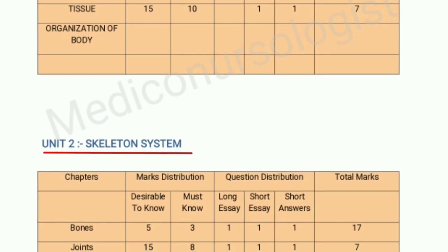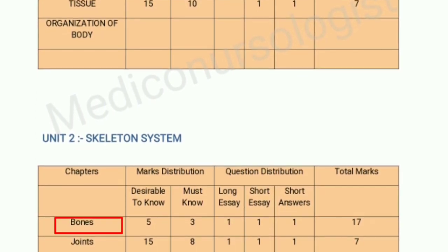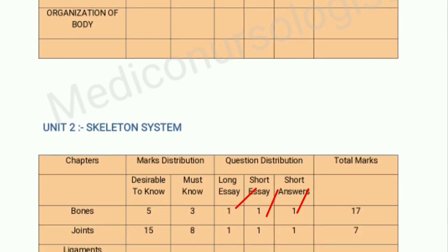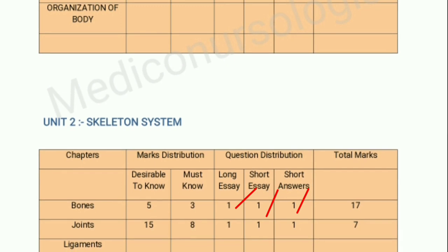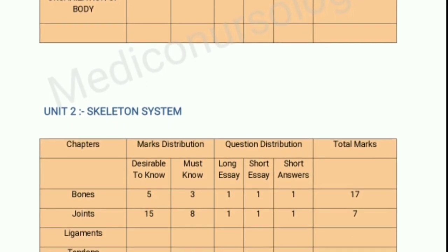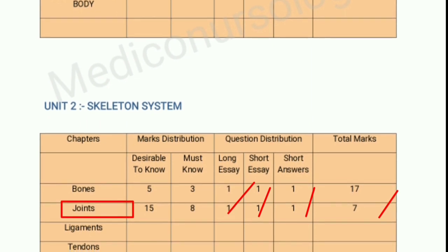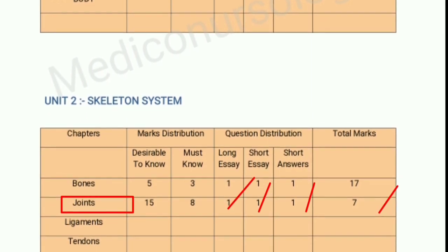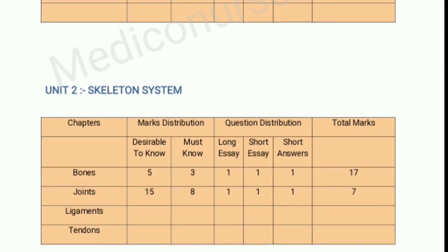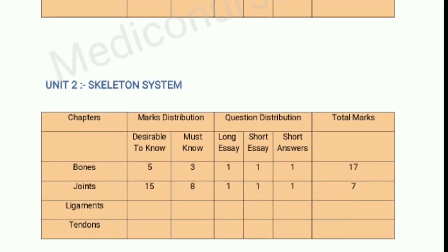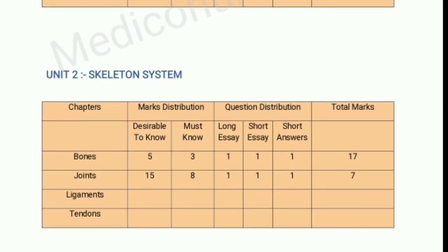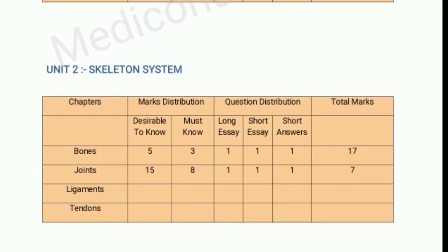Our second unit is the skeletal system, which has 4 chapters: bones, joints, ligaments, and tendons. The bone chapter carries 7 marks — 1 question for 5 marks and 2 questions for 2 marks each. The joints chapter carries 17 marks, where 1 question may come for 10 marks, 1 question for 5 marks, and 1 question for 2 marks, though most of the time joints comes only for 5 marks.